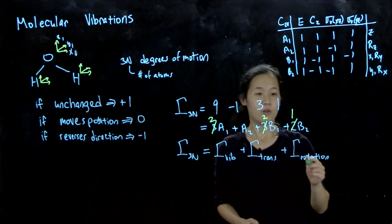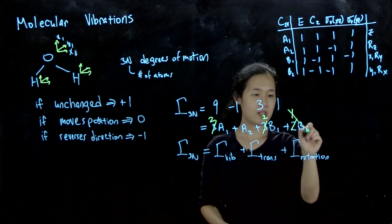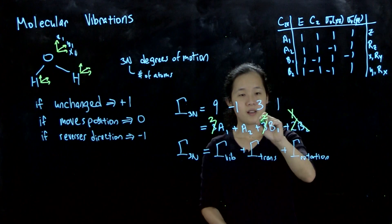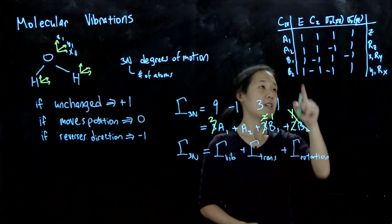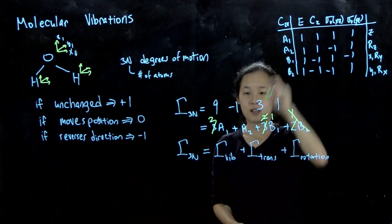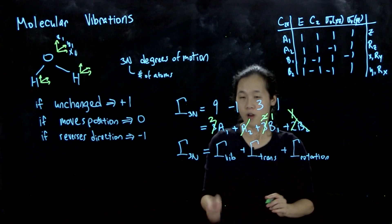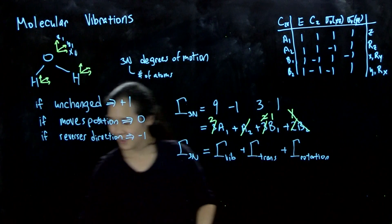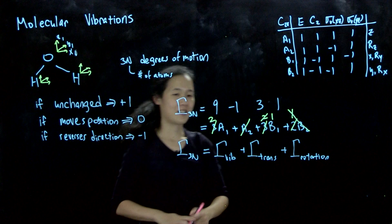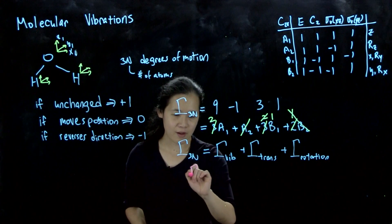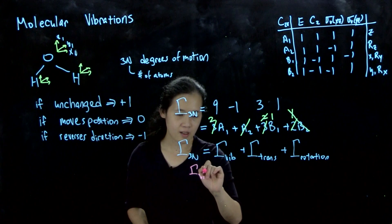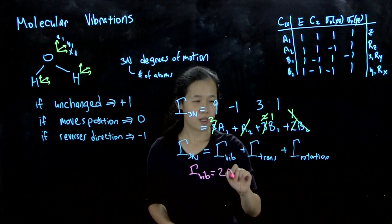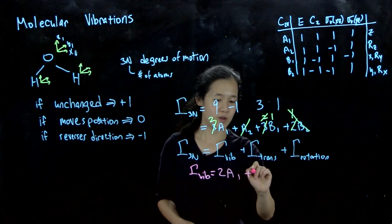We'll take out another one of our b₂s for R_z, then take out a b₁, and then take out the a₂. After subtracting those out, we find that Γ_vibration is equal to 2a₁ + b₁.